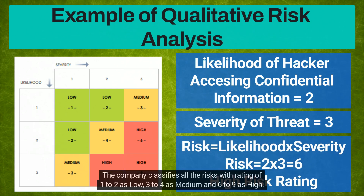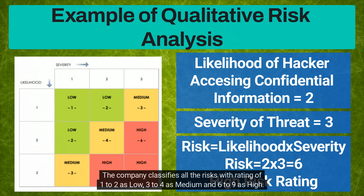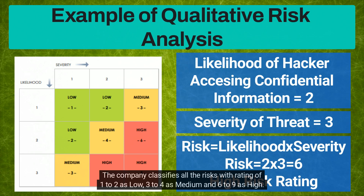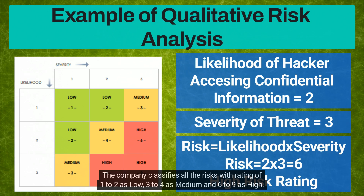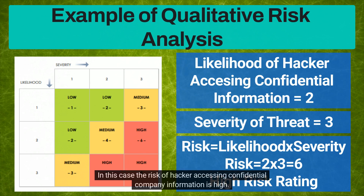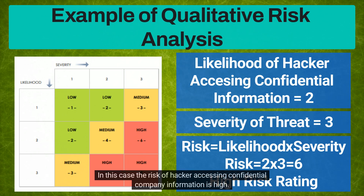The company classifies all risks: a rating of one to two is low, three to four is medium, and six to nine is high. In this case, the risk of a hacker accessing confidential company information is classified as high.